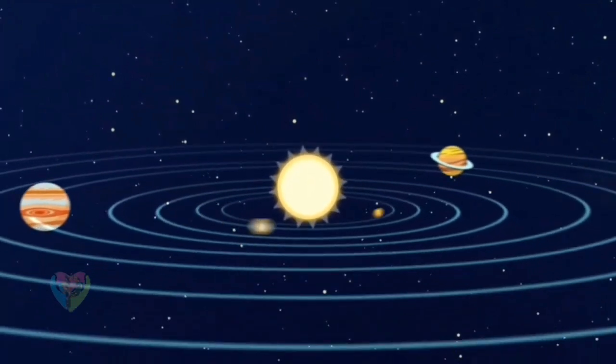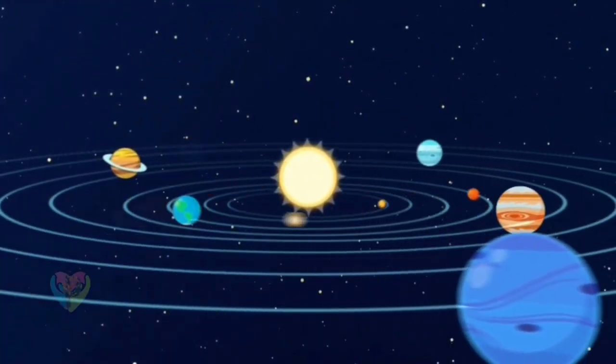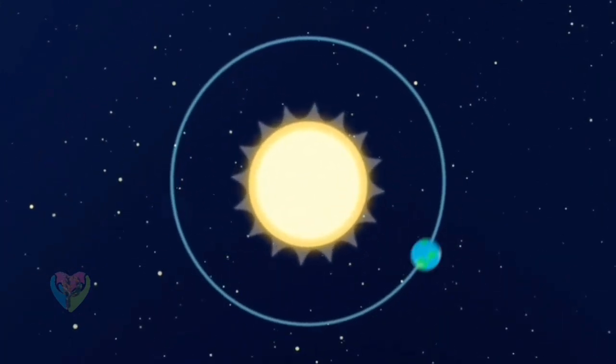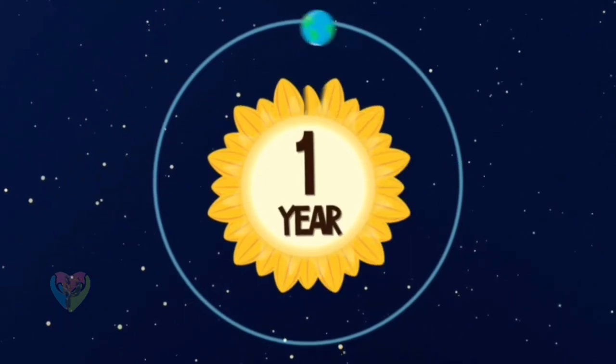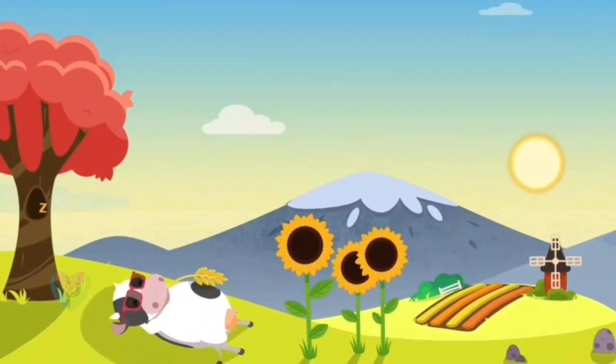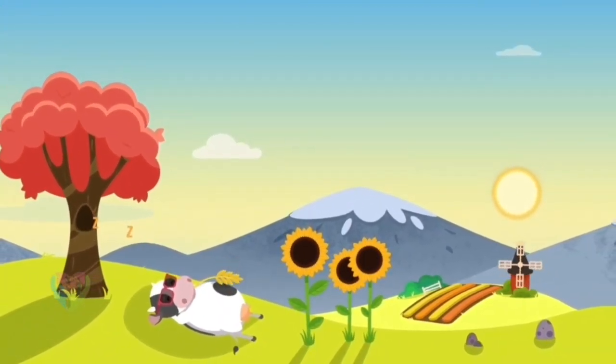Because it's so heavy, the sun is pulling on all of the planets, and is making them rotate around it. It takes our planet 365 days to make a full circle. That's one year.